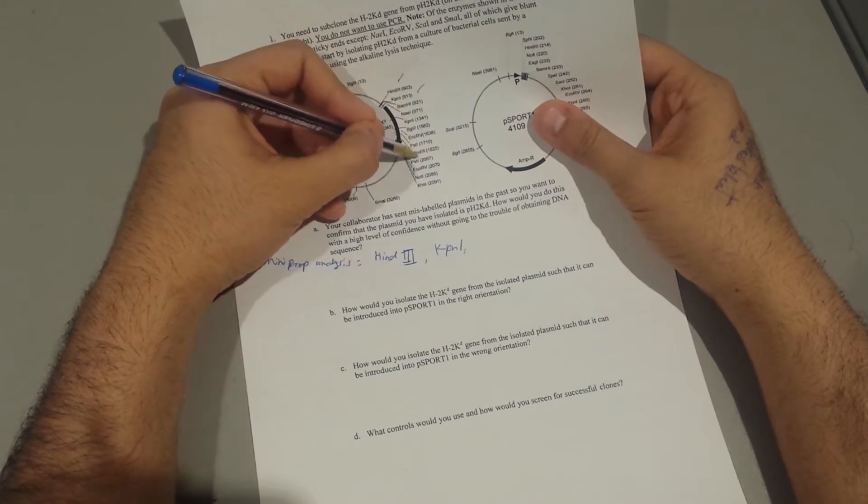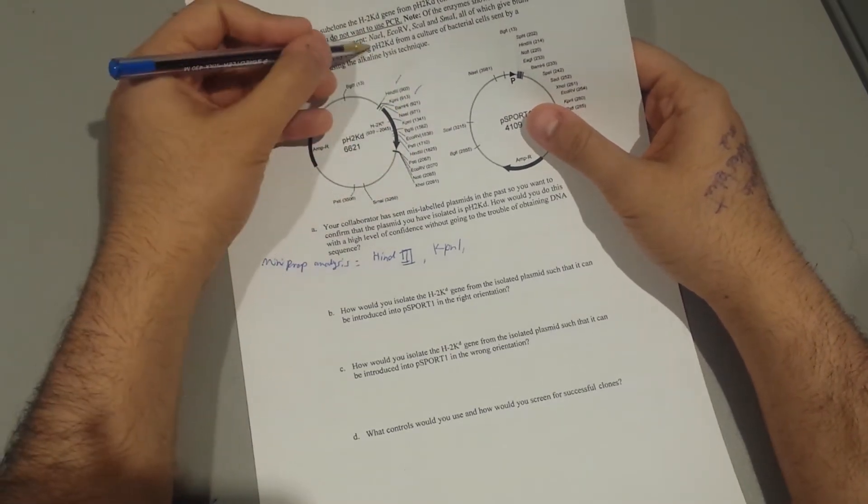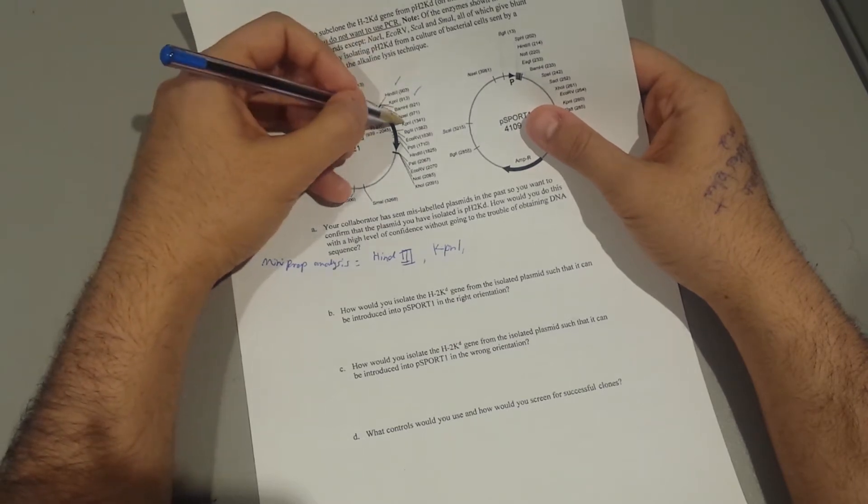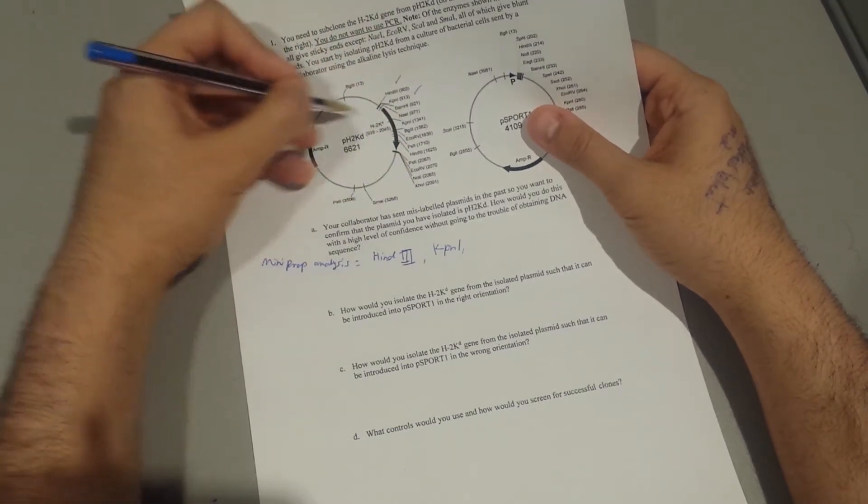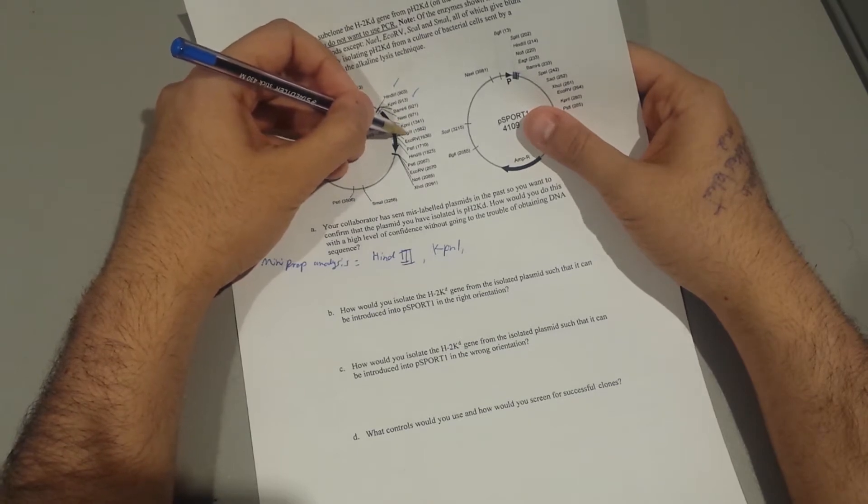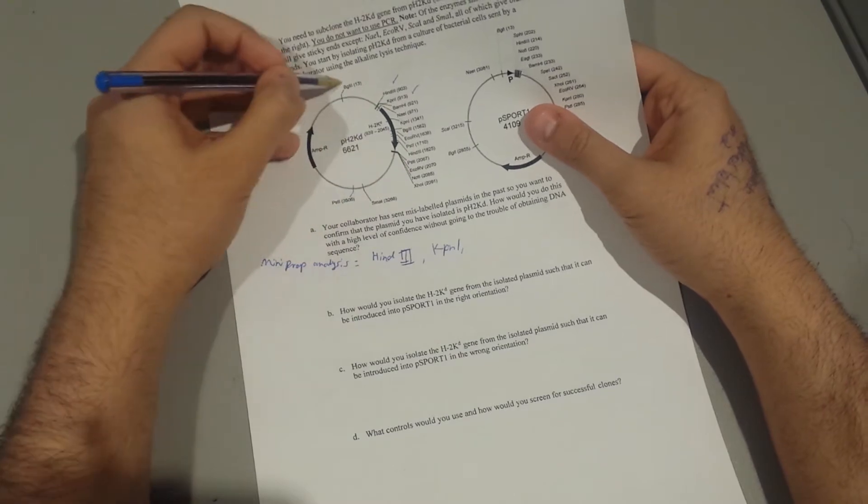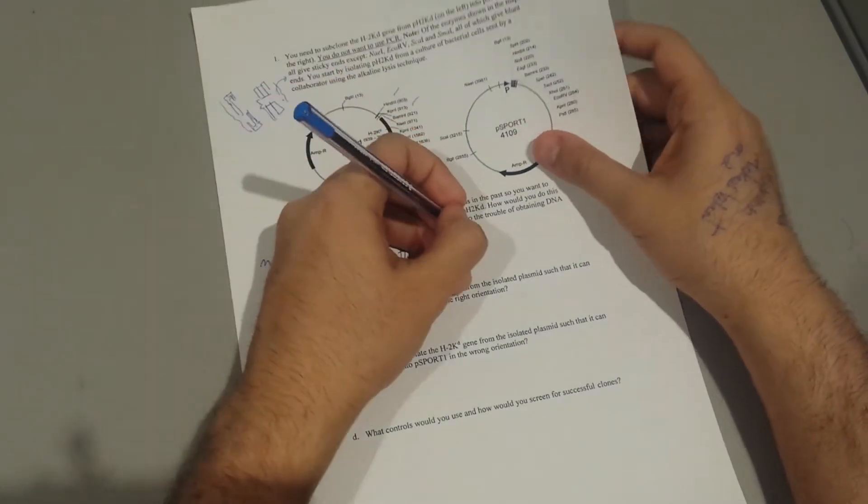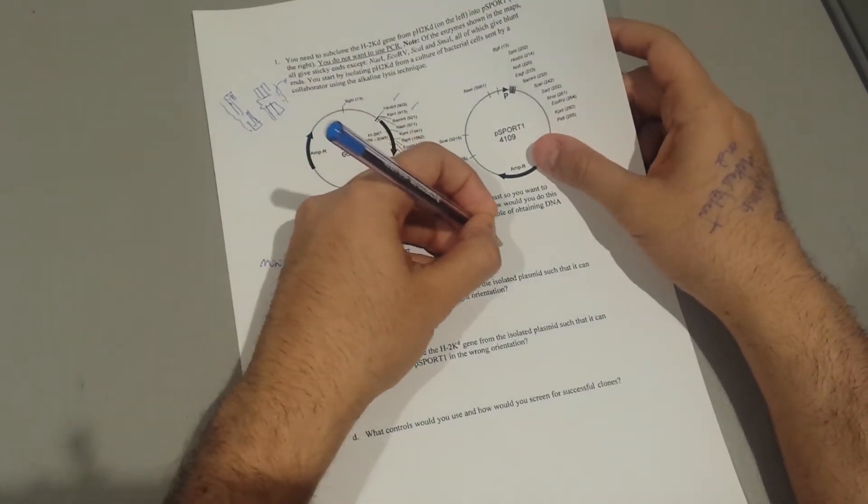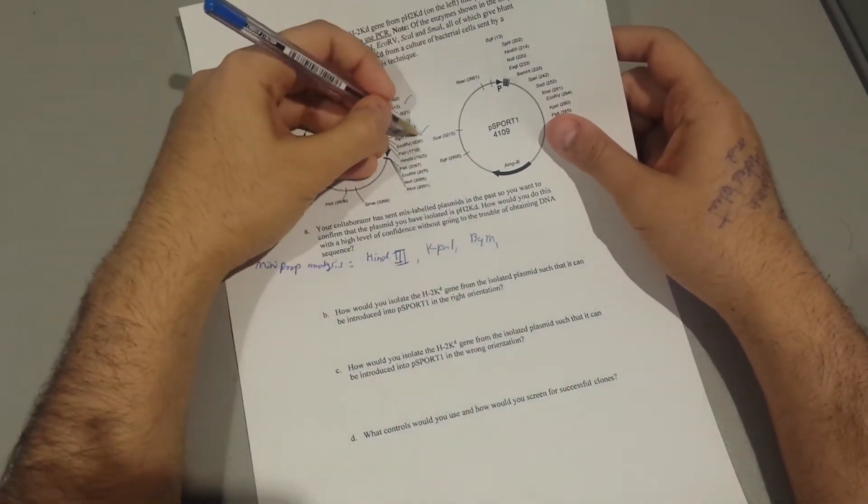Let's see BamHI, no, so that's not good. NAE1, it gives you blunt, so you don't want that, and there's another site, so you don't know. Let's see BglII, so BglII, there you go, so two. You're going to say BglII.